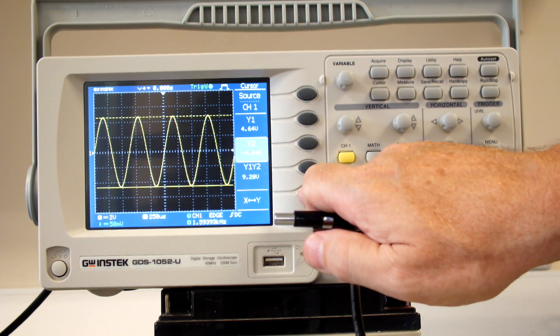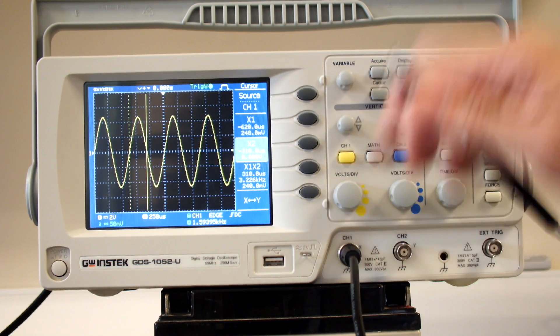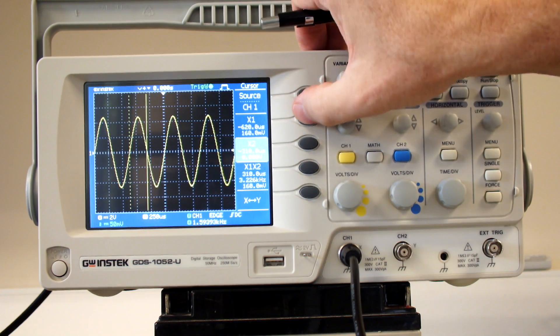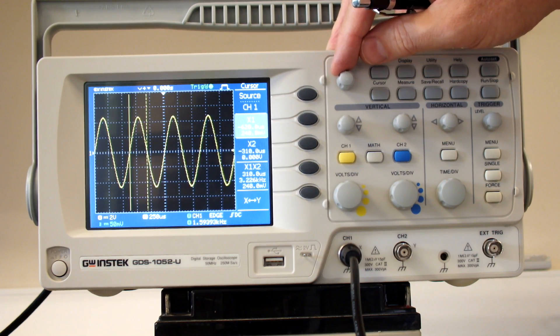What I might want to do is also measure the time. What's the period of my waveform? If I select going into the X, my cursors are now X1, and I can move that along. Maybe I find a point there where it crosses the axis.